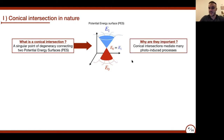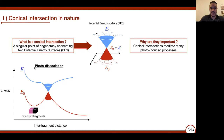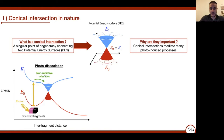You may ask yourself why it is so important to focus on this. Conical intersections are known to mediate many photo-induced processes. To give a first example, let's consider photodissociation. Suppose we have a system composed of two bounded fragments exhibiting a potential energy surface with a conical intersection. Initially, the system is at a local minimum, and when a photon is incoming, the system absorbs the photon and gets promoted to its first electronic excited state.